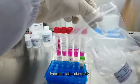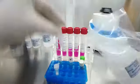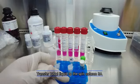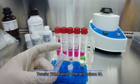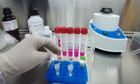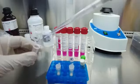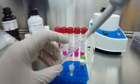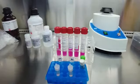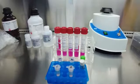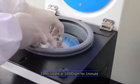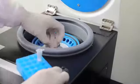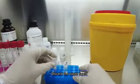Prepare a spin column I. Transfer 700 microliter liquid to the spin column I. Centrifugate at 10,000 revolutions per minute for one minute. Discard the waste liquid.